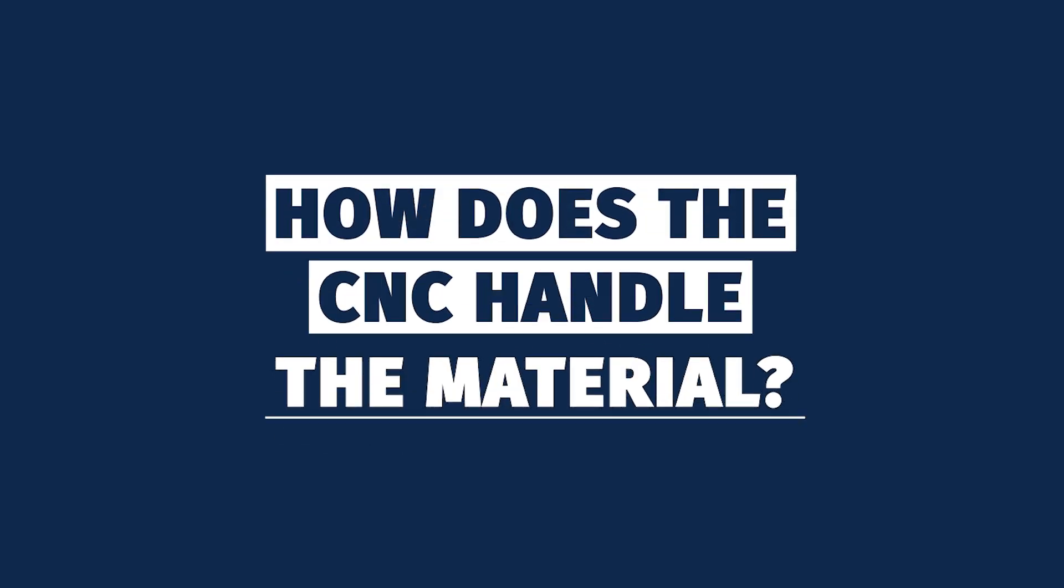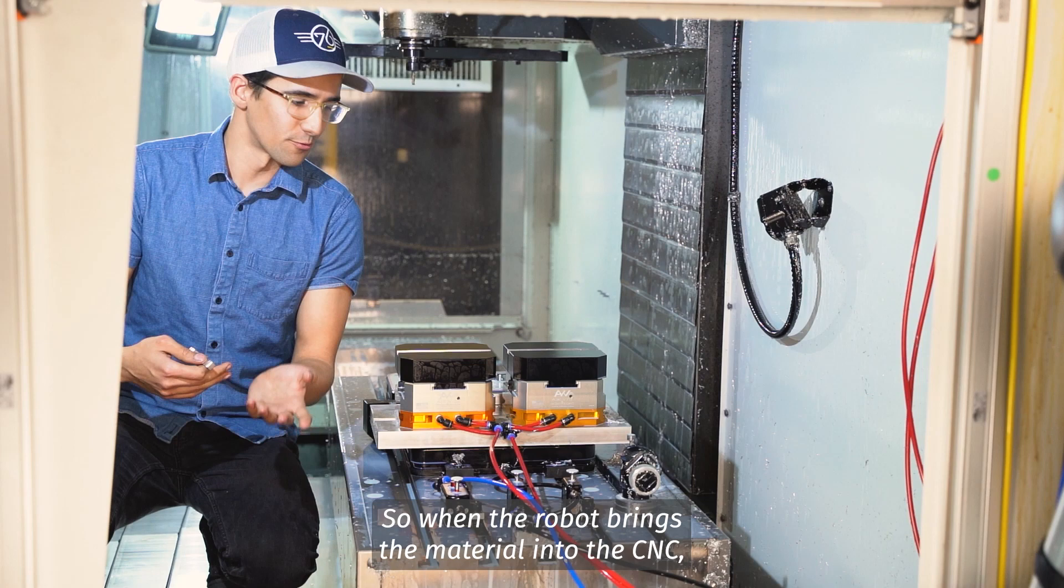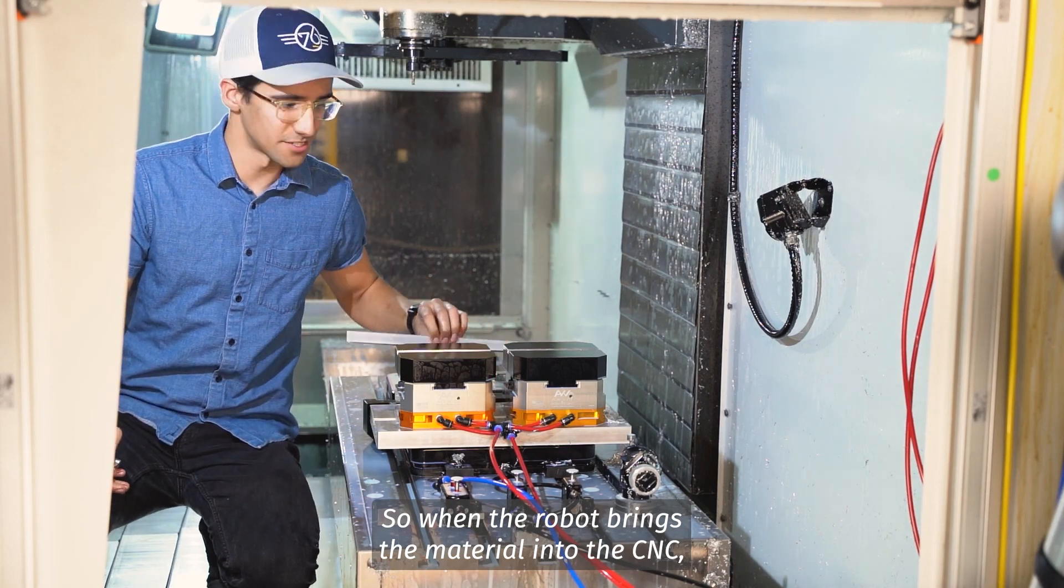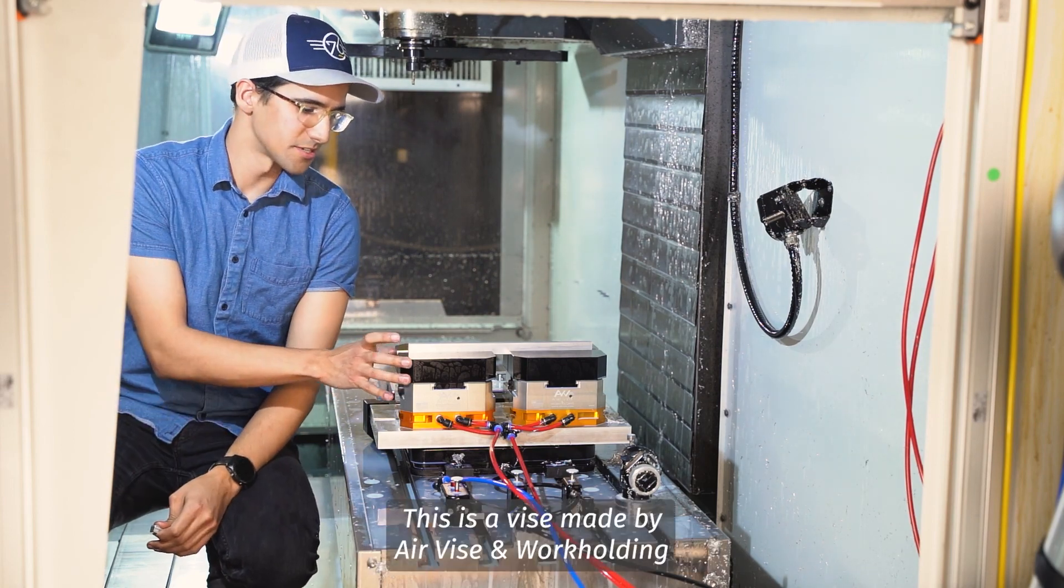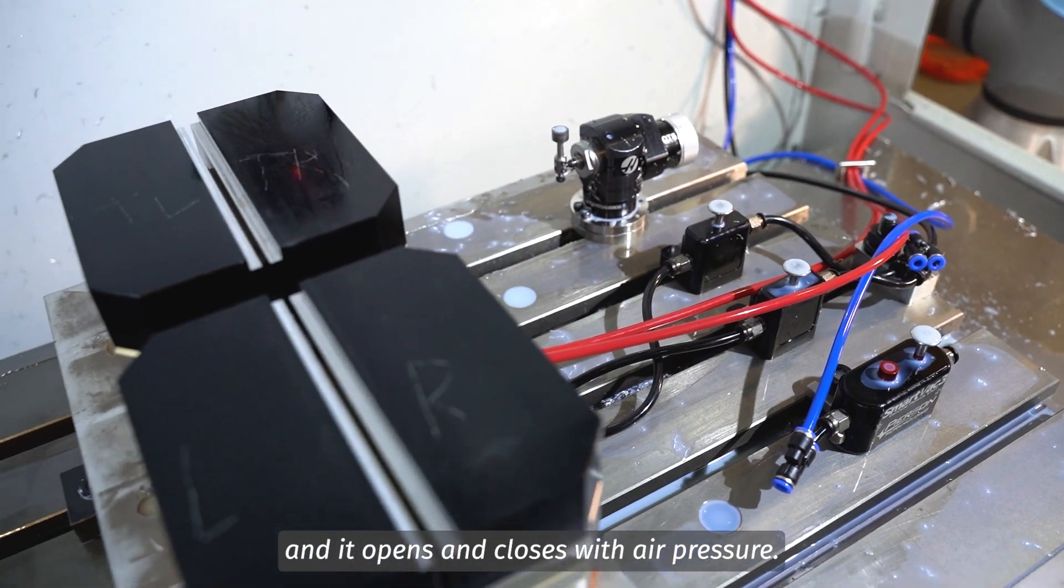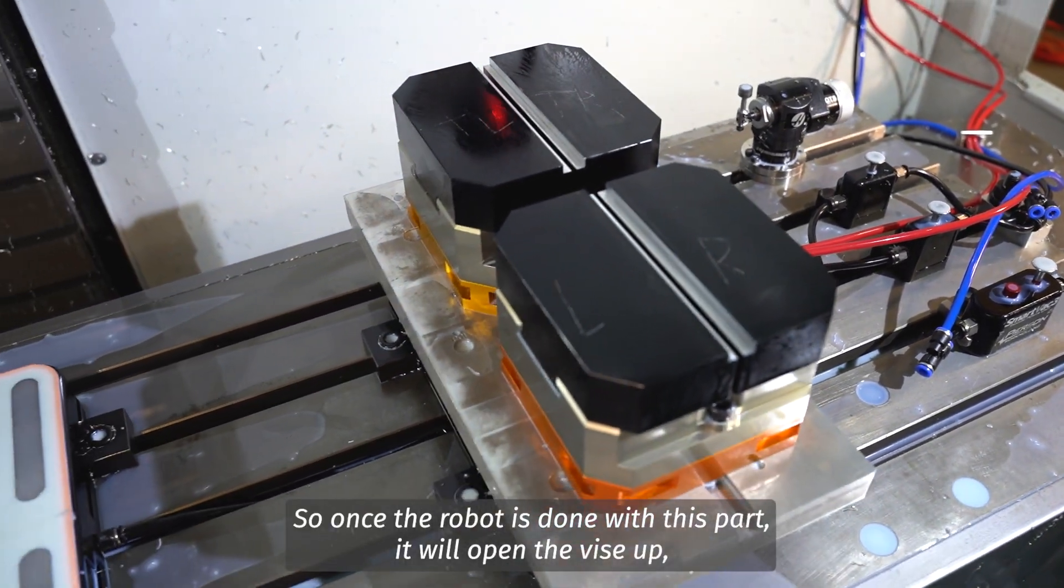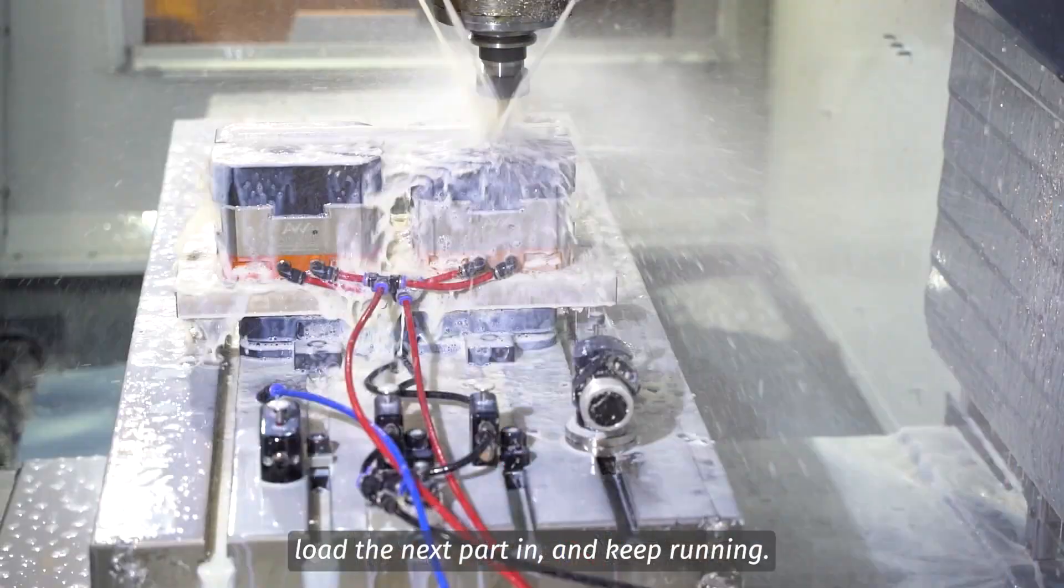So when the robot brings the material into the CNC, it'll load it into these air vise jaws. This is a vise made by Air Vise Work Holding, and it opens and closes with air pressure. So once the robot is done with this part, it will open the vise up, load the next part in, and keep running.